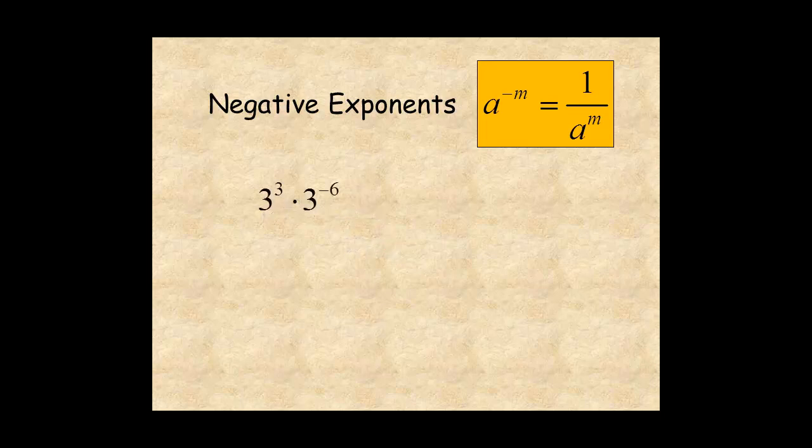For this example, begin by using the multiplication rule and add the exponents, 3 plus negative 6, which is 3 to the negative 3. This is rewritten as 1 over 3 to the positive 3, which is 1 over 27.